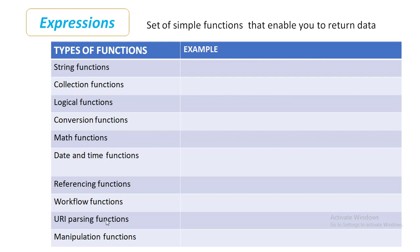The 10 categories are: string functions, collection functions, logical functions, conversion functions, math functions, date and time functions, referencing functions, workflow functions, and URI parsing and manipulation functions. These are the 10 different categories of functions available inside Power Automate.